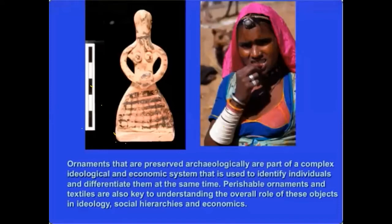We also need to remember that there are many perishable aspects of ornamentation that we do not see, so we're only seeing the tip of a very big iceberg. We have textiles, hair decorations, braiding, tattooing, and many other aspects of ornamentation that are not visible. These forms of ornamentation are used to differentiate people by religion or ideology, through social hierarchies, as well as for economics.